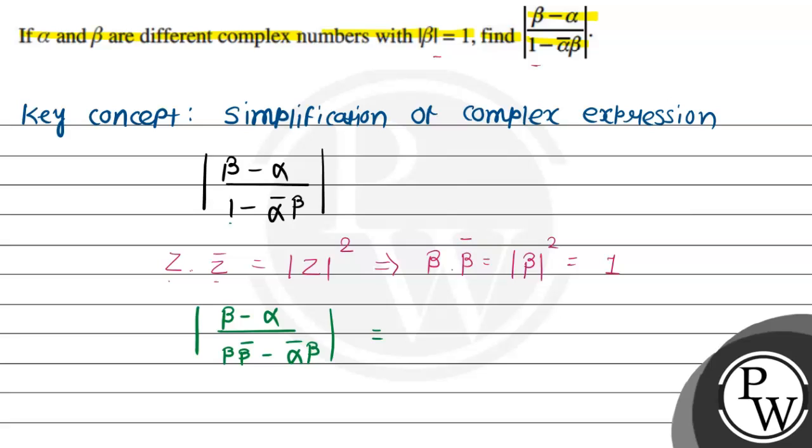That is equal to, you have beta and beta common, so 1 upon modulus of beta. So in second mode, beta minus alpha divided by beta bar minus alpha bar, mode over.